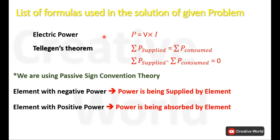While solving this problem we will be using the electrical power formula, which is the product of voltage and current, and Tellegen's theorem. According to Tellegen's theorem, the power supplied to a network is always equal to the power consumed by the elements of that network, and if we add these two powers their result will be zero.